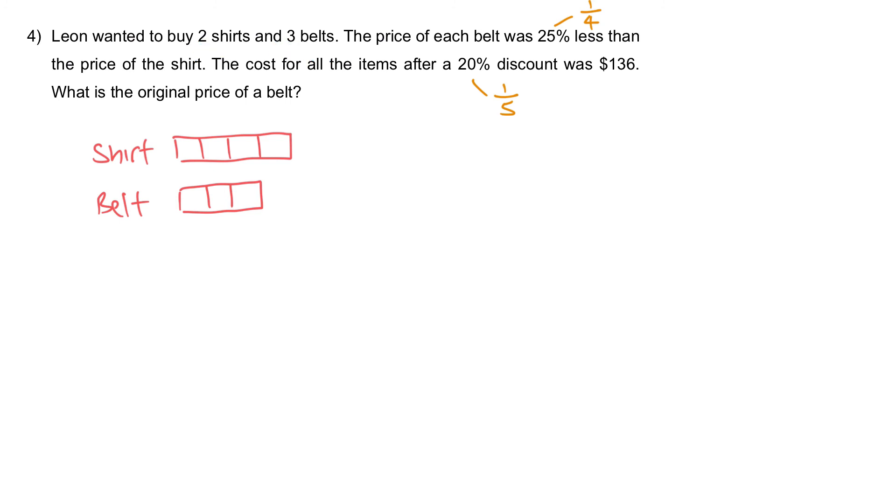For 2 shirts and 3 belts. If you want, you can do the stacking method. Let's draw out. This is 2 shirts and I can have 3 belts. This is the entire thing. All the things that Leon bought. 2 shirts and 3 belts.